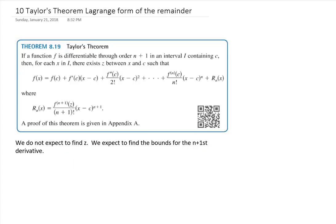One very common way to define the absolute error is this quantity here. F to the n plus 1 means the n plus first derivative. So if we have a polynomial of degree 15, it's the 16th derivative. The number z is a specific number — we most often won't be able to find it exactly. It's the 16th derivative at z over n plus 1 factorial, times x minus c to the 16th power.